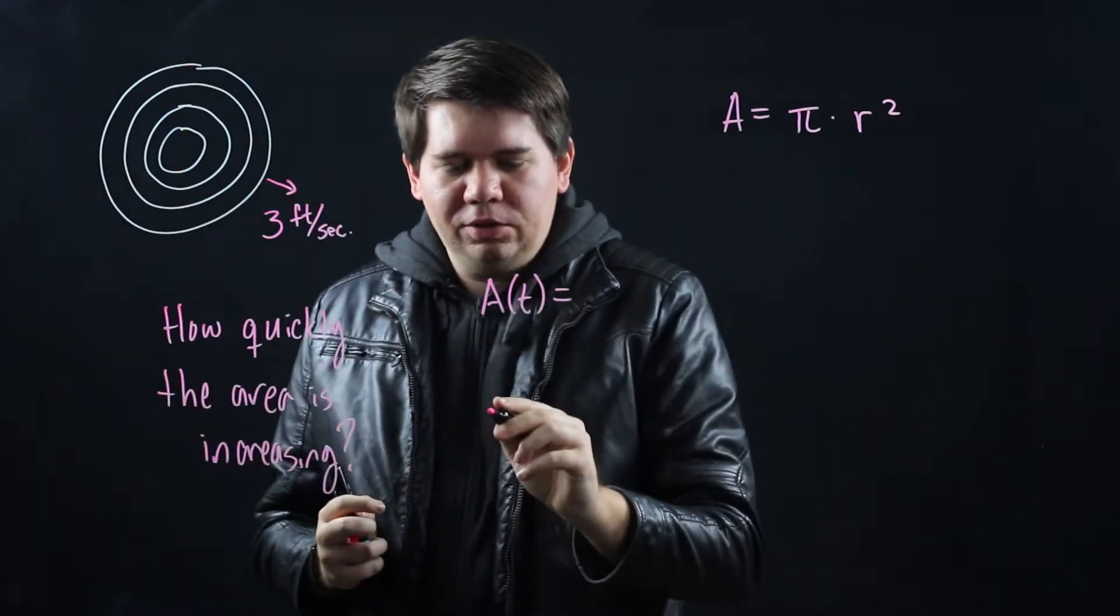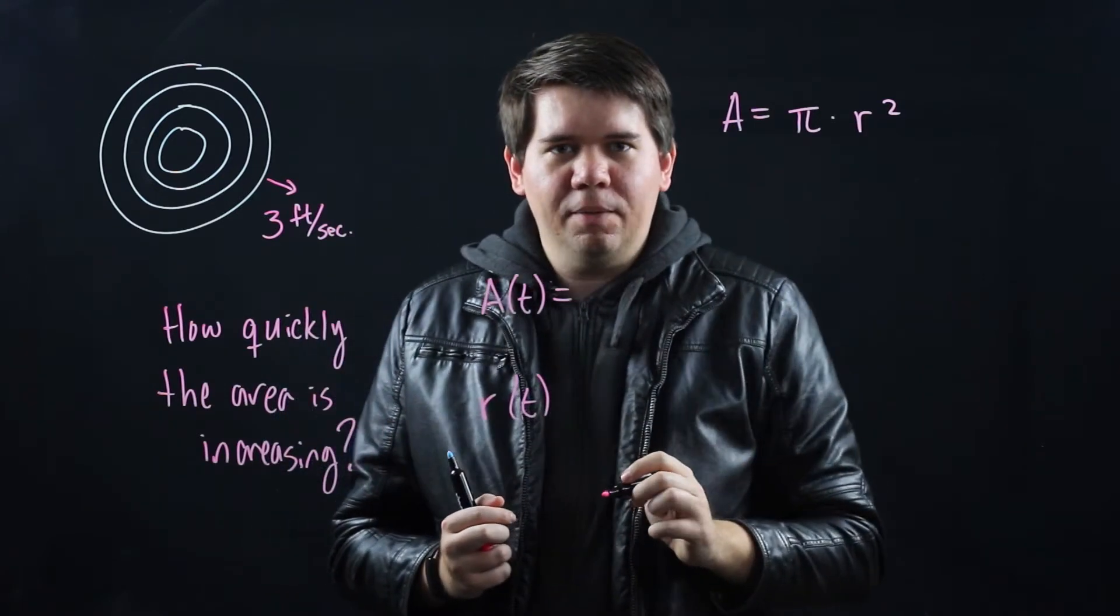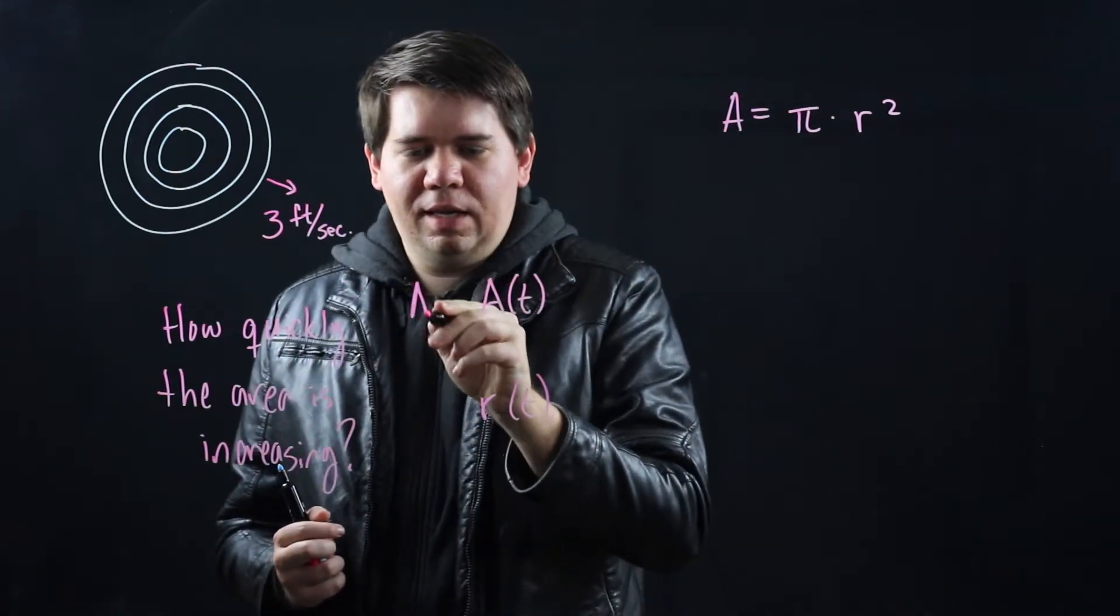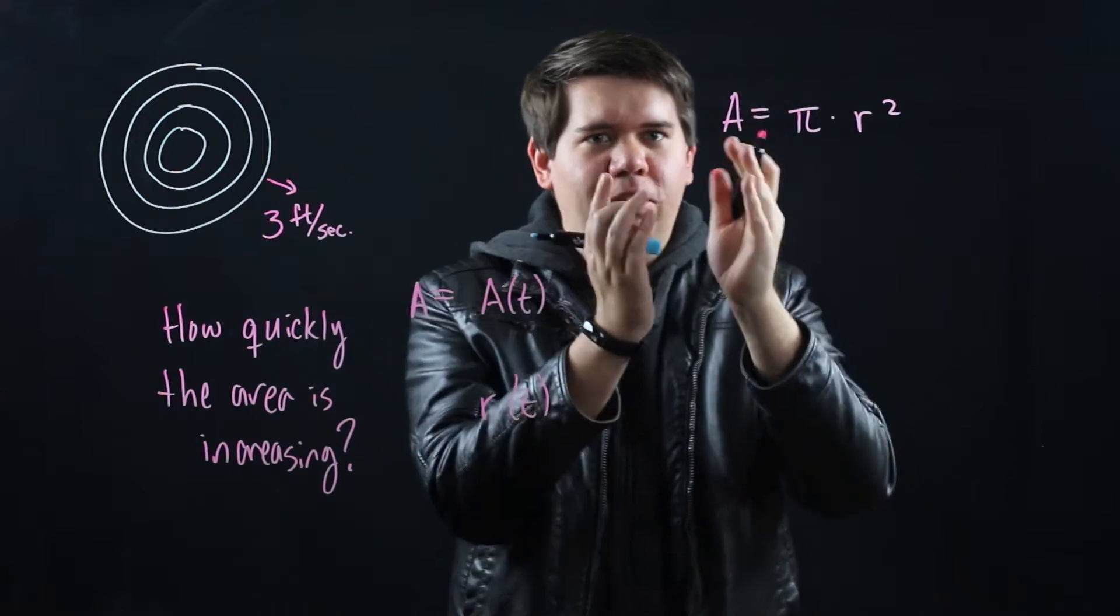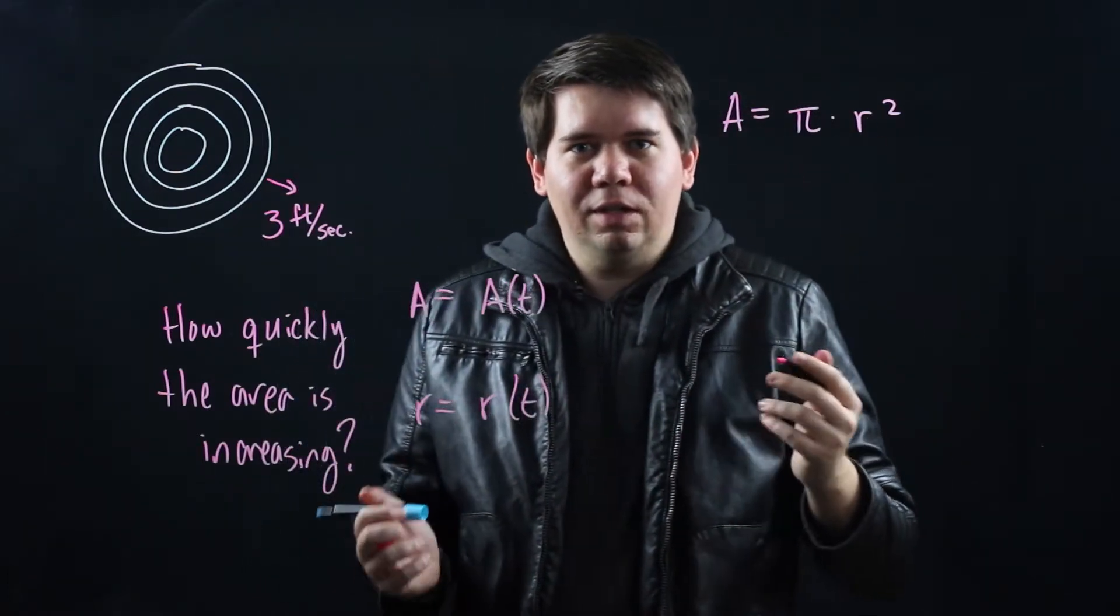And likewise you also know your radius is some function of time. So although right here I just put A and r, we should be thinking that A actually represents some function of time and the r also represents some function of time.